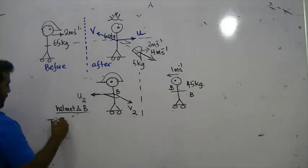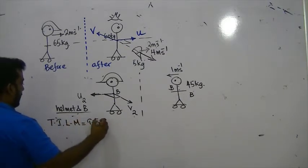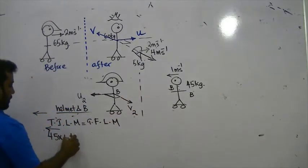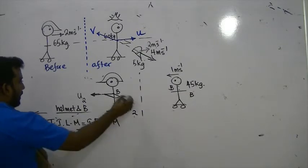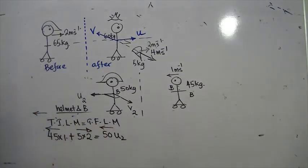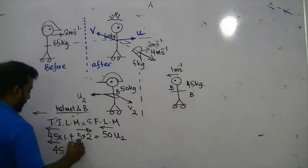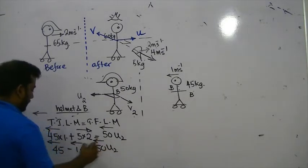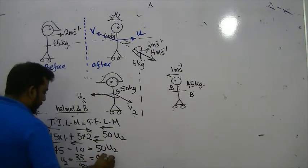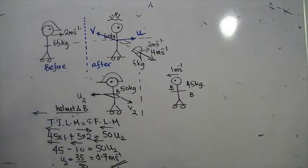Applying conservation in the forward direction: initial momentum is 45 × 1 minus 5 × 2 (opposite direction), equals 50 × U2 after catching. So 45 − 10 = 50 U2, giving 35 = 50 U2, therefore U2 = 0.7 meters per second.